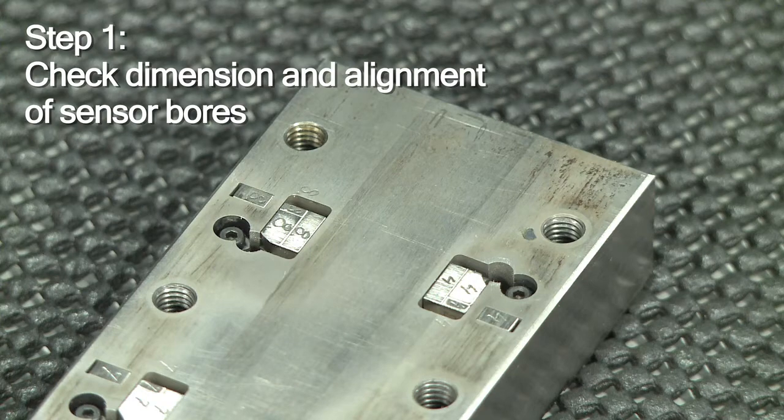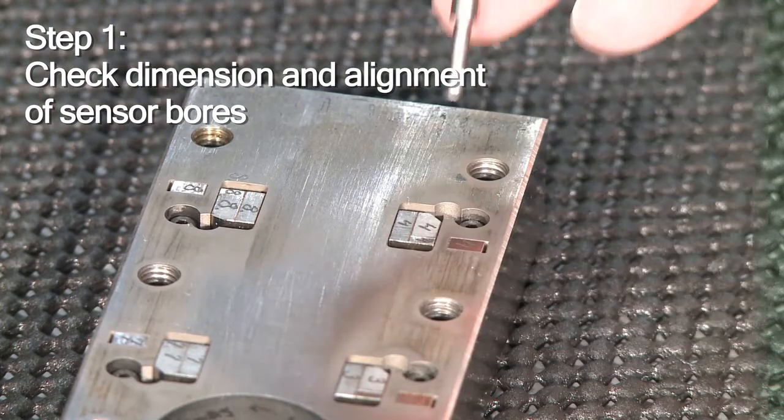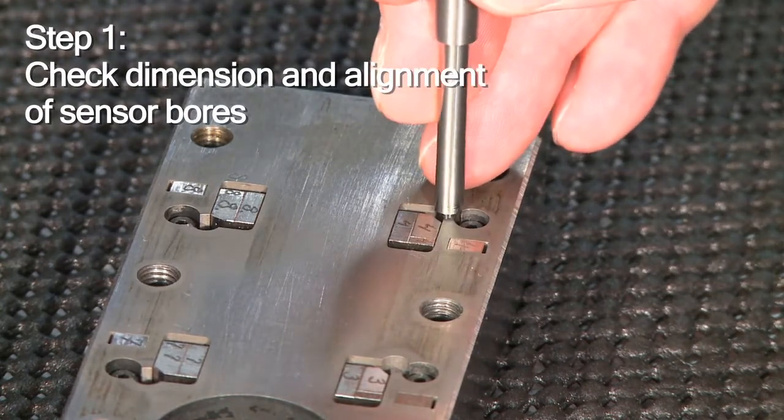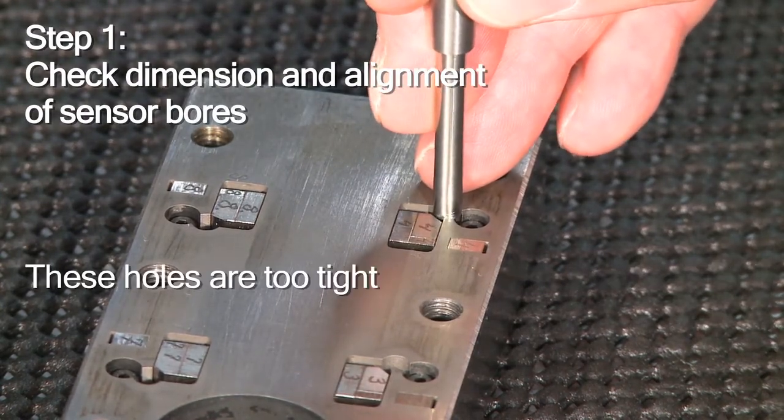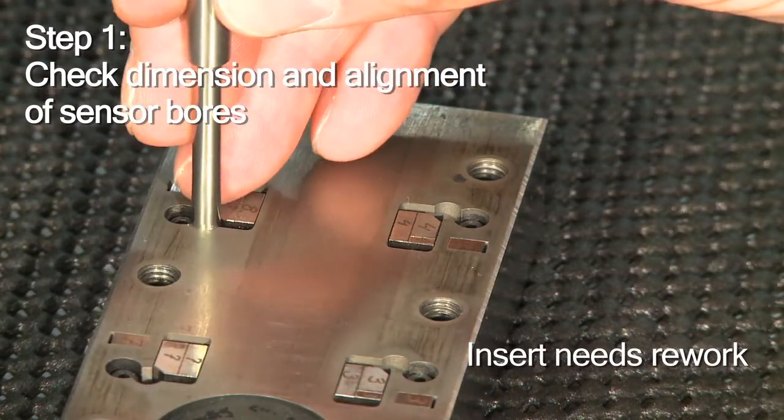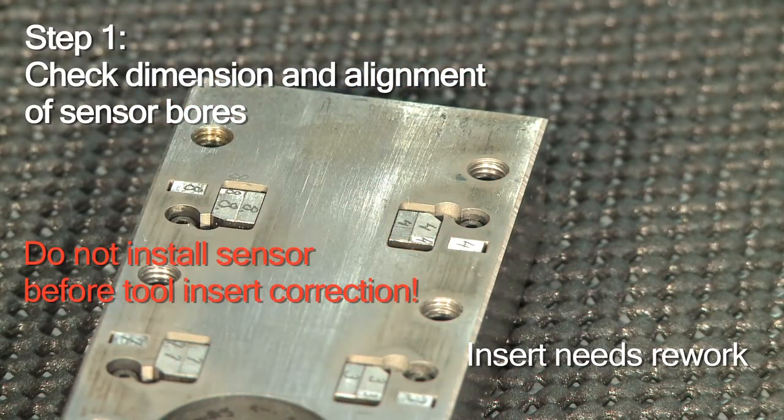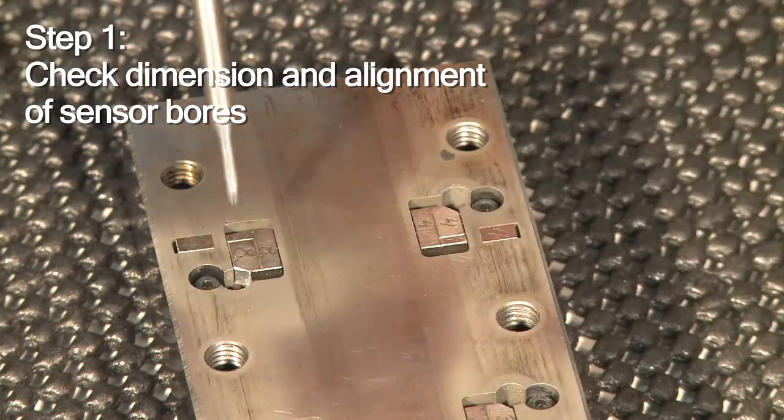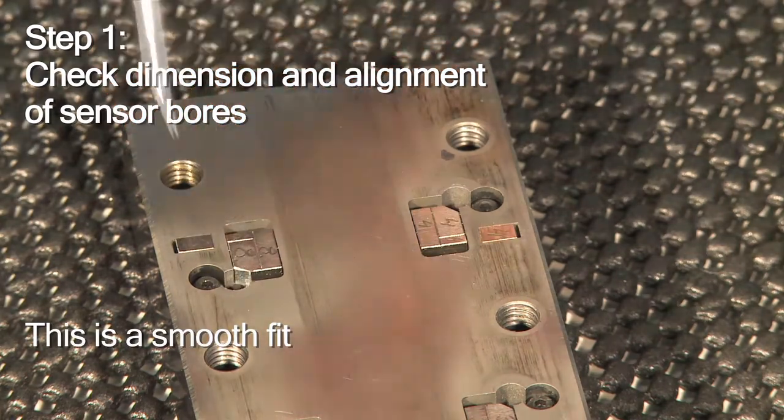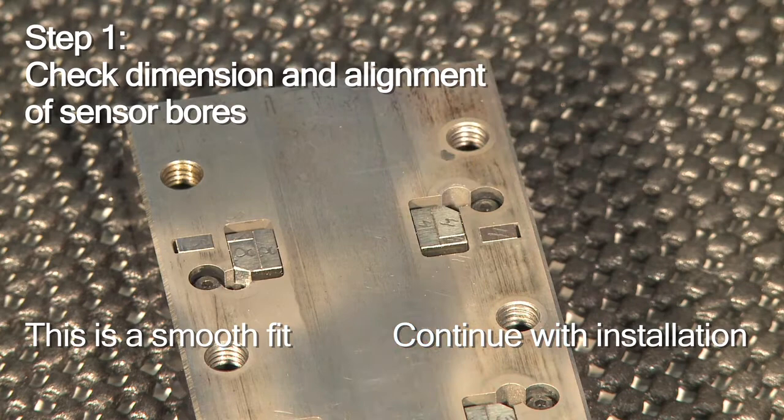The first step is to check the sensor bores using the appropriate checking tool. There's a tool for each sensor type. You insert the checking tool into the hole. There has to be a sliding fit. These holes are too tight. You have to return the insert for rework. The sensor must not be installed until the bore is corrected. You will notice a smooth and easy fit immediately. Here, the bores are perfect and you can continue with your installation.